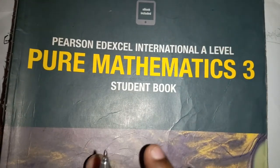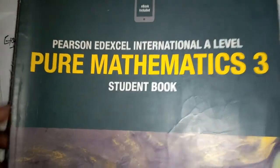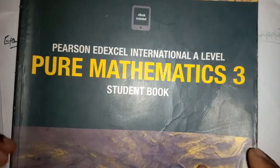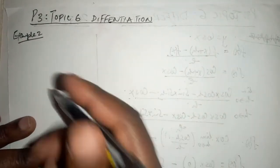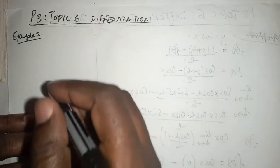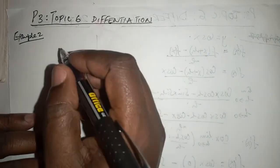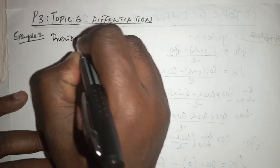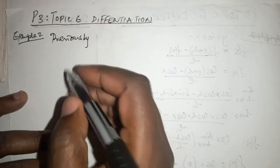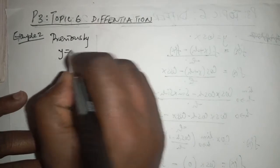In this particular video, specifically example 2 of chapter number 6, which is differentiation. It is important to note that previously we have understood that when y equals sine of x, then dy/dx equals cosine of x.